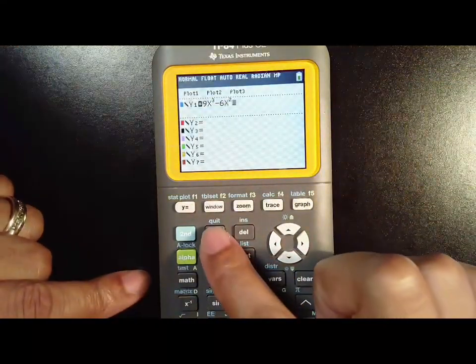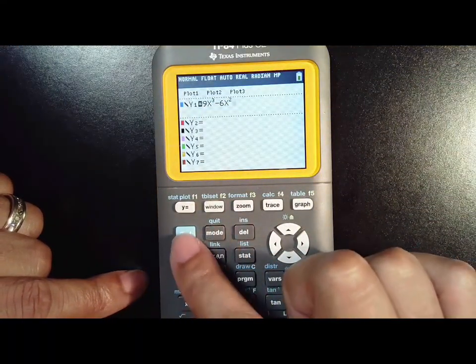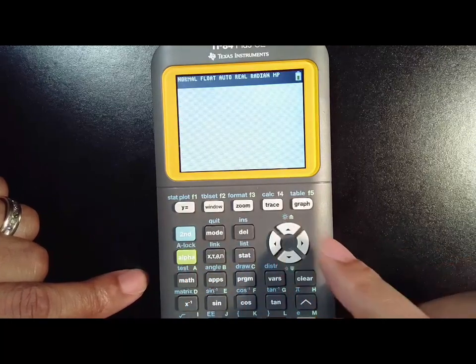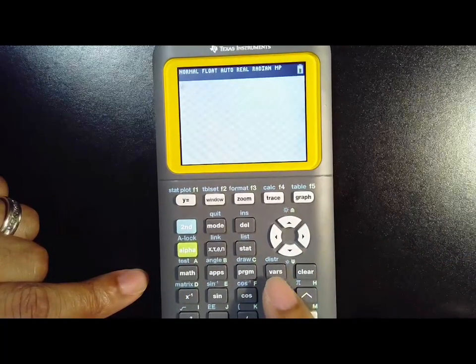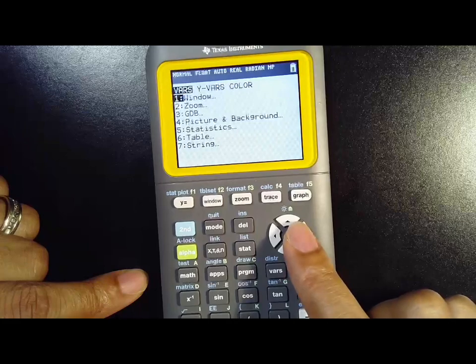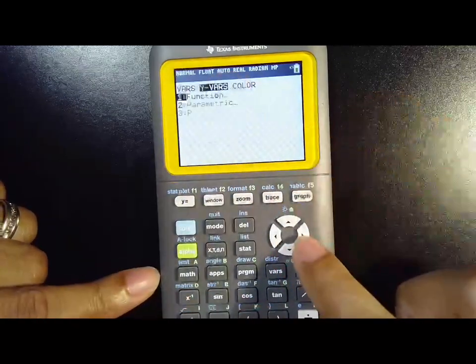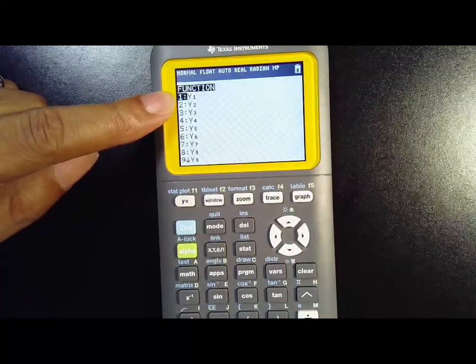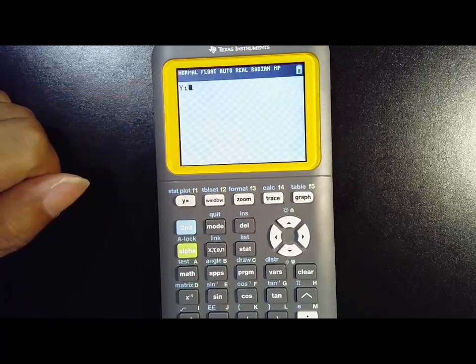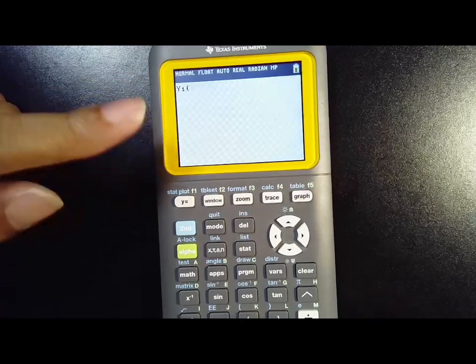To get back to the other part, you just go to quit, which is in blue, so it's second mode. What I will do is go to vars, which is like variables, and I'll go over to y variables. I want the function y1, and what I can do is do y1 of, let's say I'm looking